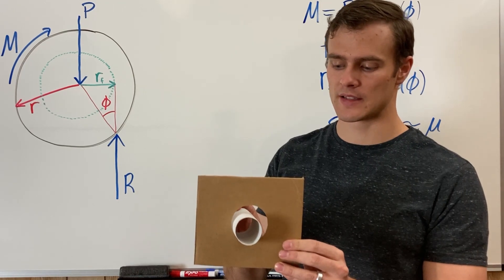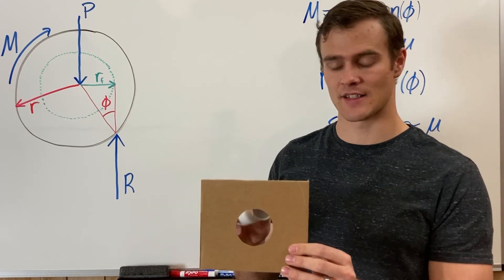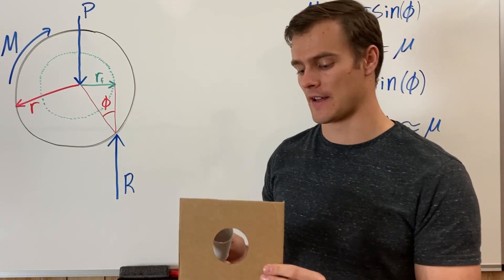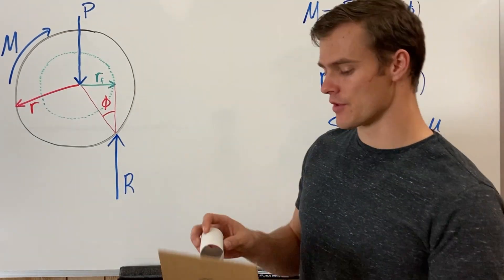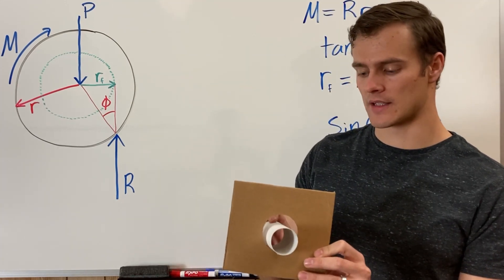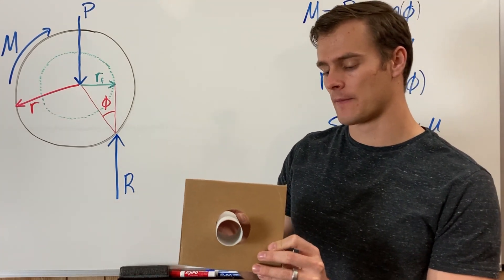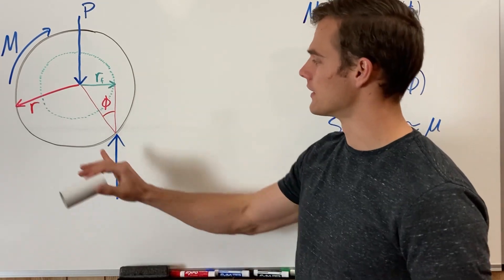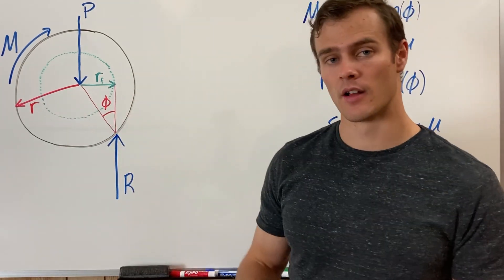When it's rolling up it's static friction because it's not slipping, and once it gets to this point it starts slipping and it becomes kinetic friction. So the reaction force when it climbs up the side, the reaction force moves over a little bit, and that's why R is offset from the center of the axle.